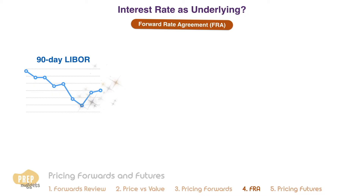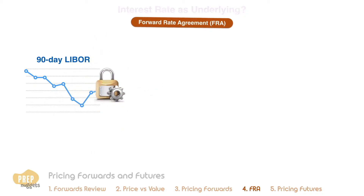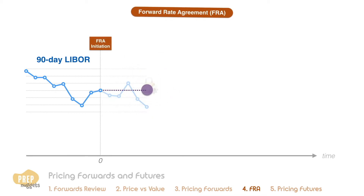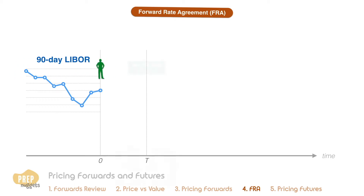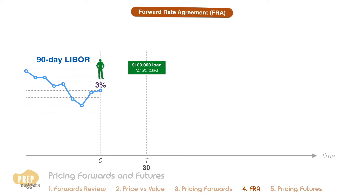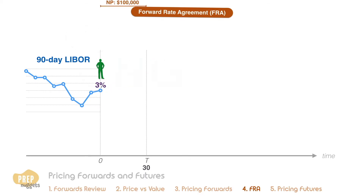The point of entering into an FRA is to lock in a certain interest rate for borrowing or lending at some future date. For example, Green is a borrower and he anticipates that he'll need to take a $100,000 90-day loan 30 days from now. The current market rate he can borrow at is a 90-day LIBOR rate of 3%, and he's concerned that LIBOR would have risen by the time he actually takes the loan. What he can do is take the long side of a forward rate agreement with a notional principal of $100,000.